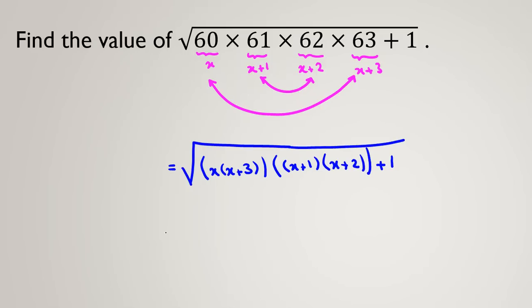Now, here, the first term, if we expand this, it will be x squared plus x times 3, which is 3x. And the next term is x squared plus 1x plus 2x, which is 3x. Plus 1 times 2 is 2, plus 1.